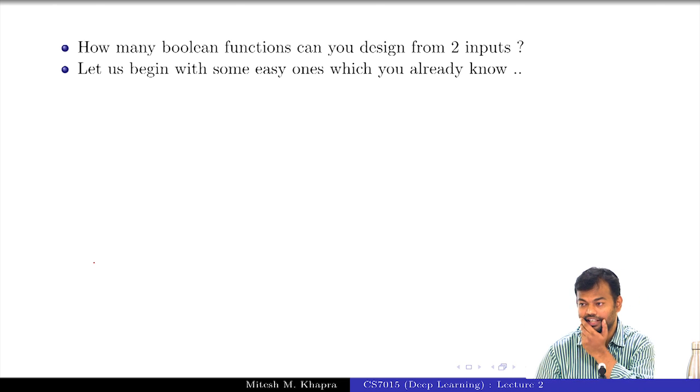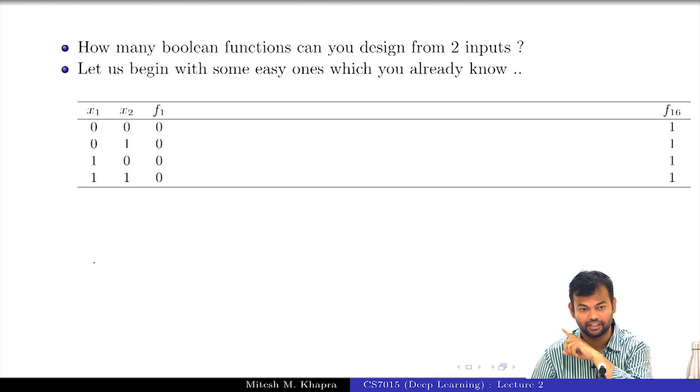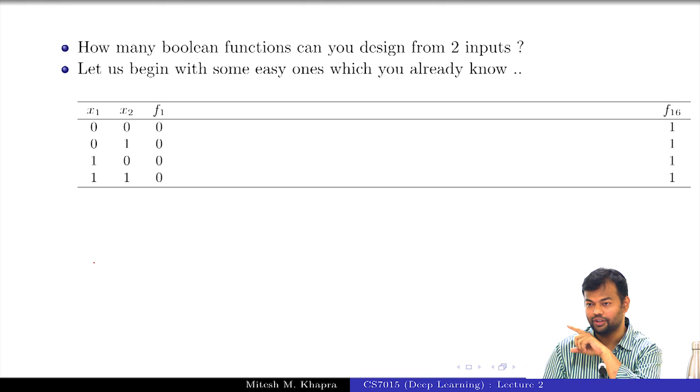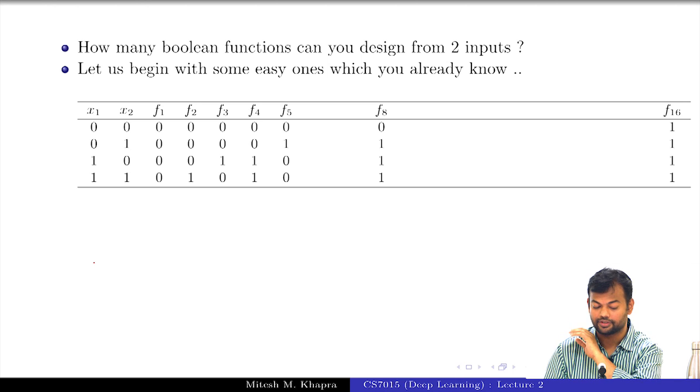Let us begin with some easy ones that you already know right. So, these are two inputs x1, x2 what is this function? Always off, the other extreme is always on and I have already given many the answer f 16 right. And then you have the and function, the or function and then some other functions right.